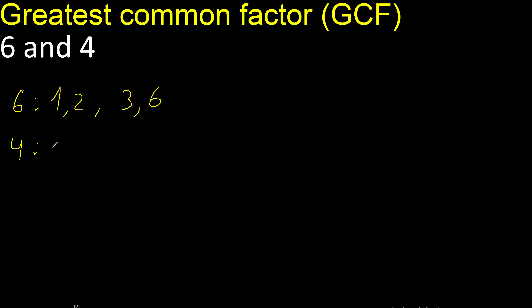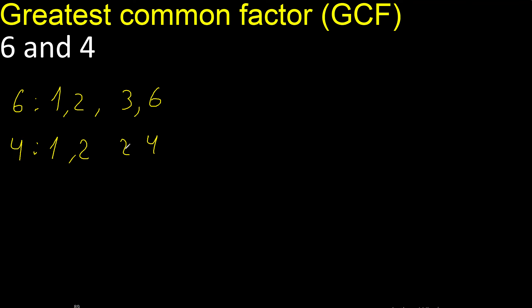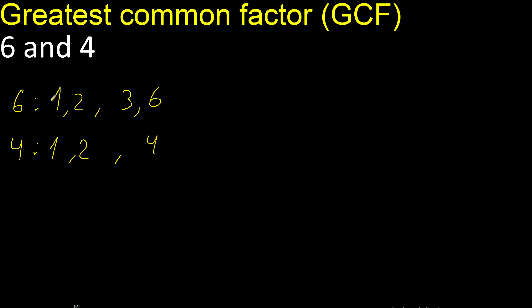Factors — always start with 1. 4 divided by 1 is 4. Next is 2. 4 divided by 2 is 2. 2 is here.